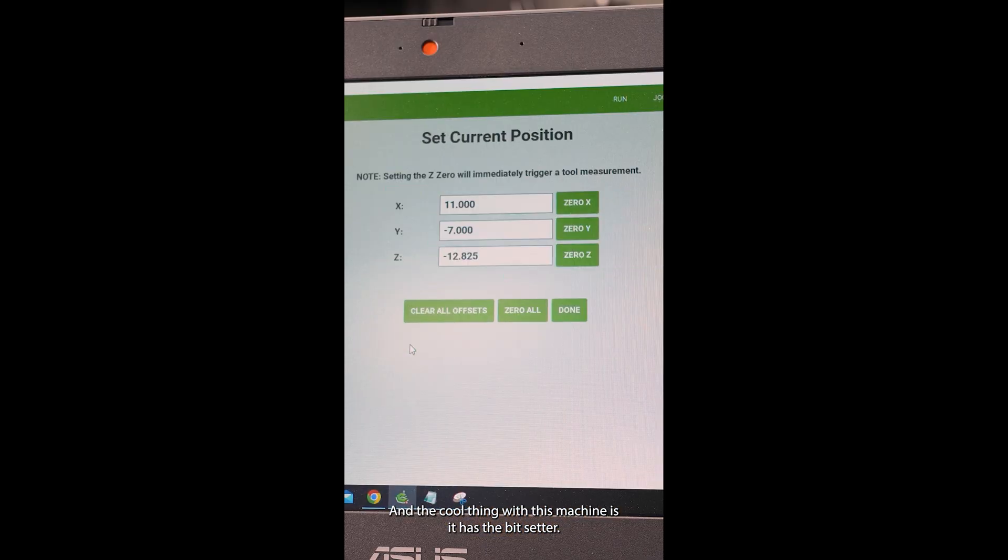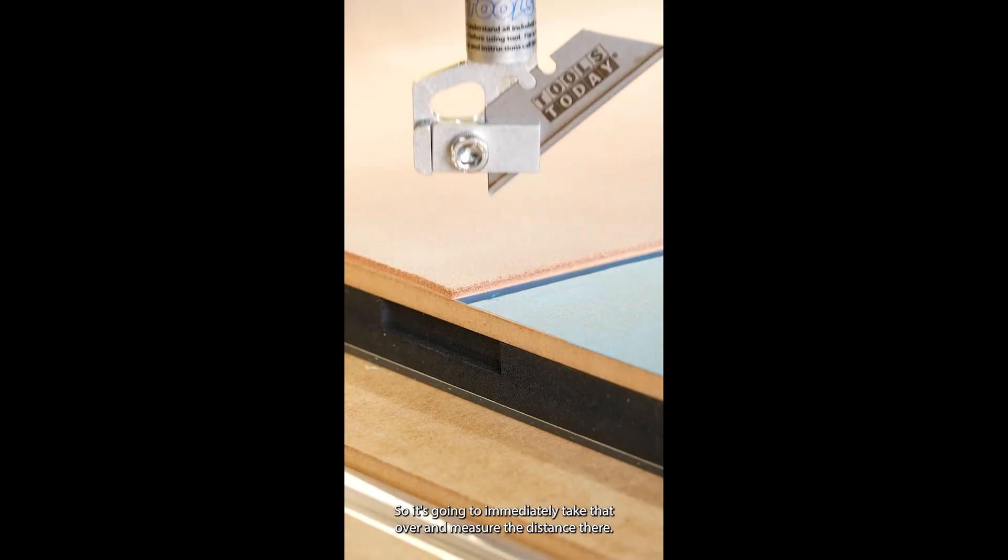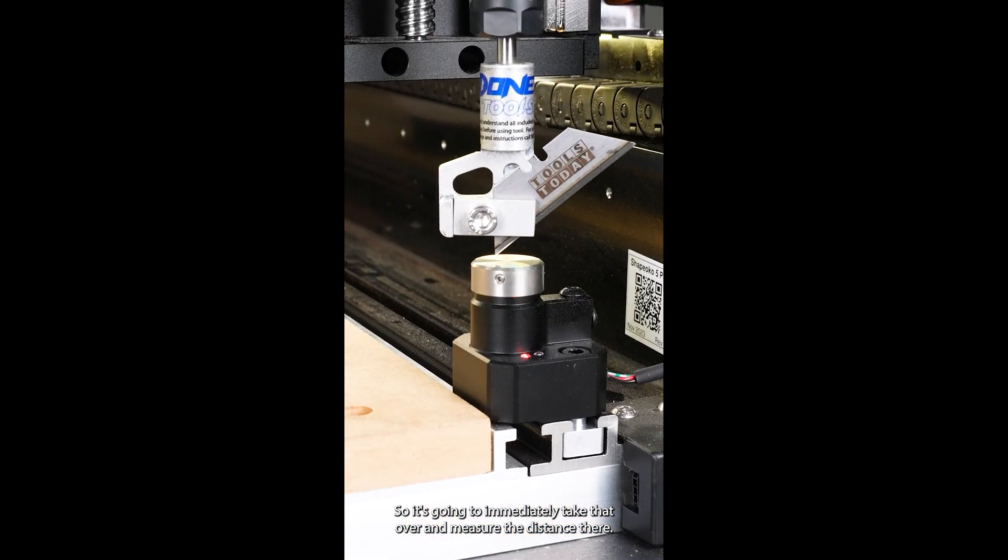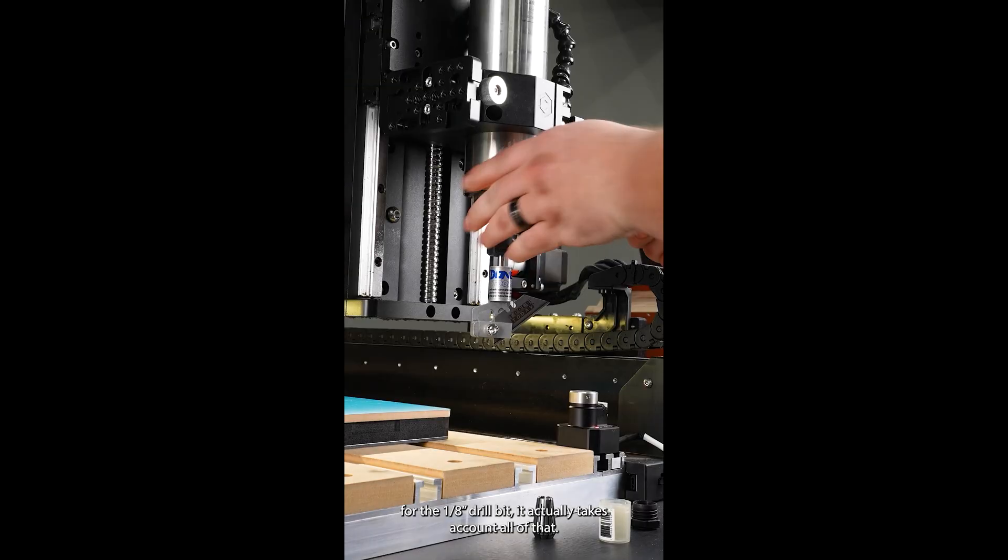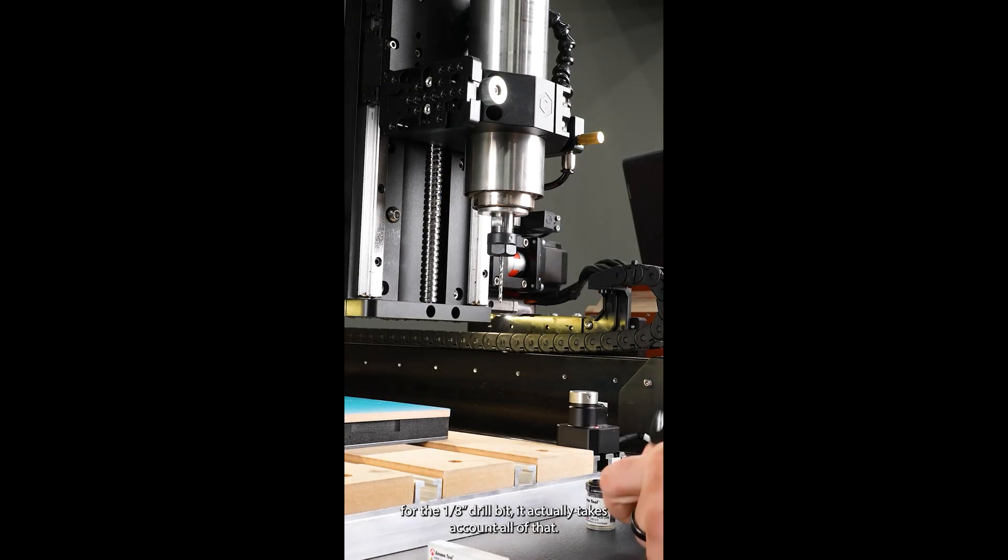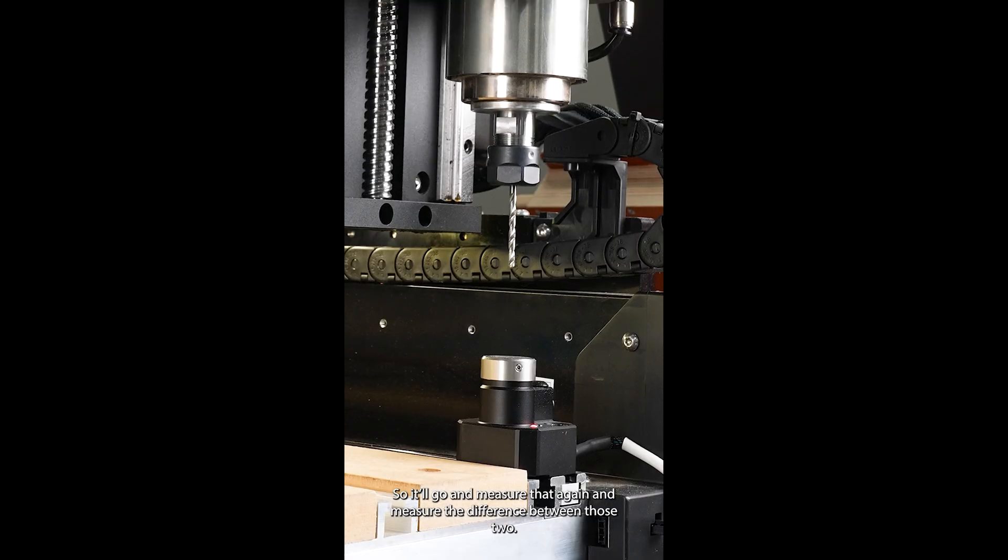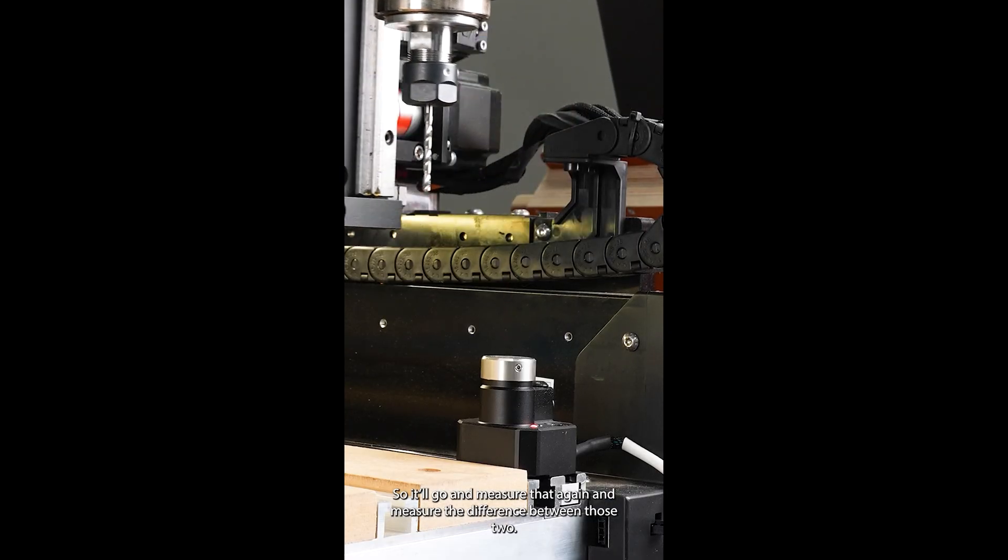Then I'll just set the Z zero position. The cool thing with this machine is it has the bit setter, so it's going to immediately measure the distance there. When we switch out for the eighth inch drill bit, it actually takes account of all of that. It'll measure that again and measure the difference between those two.